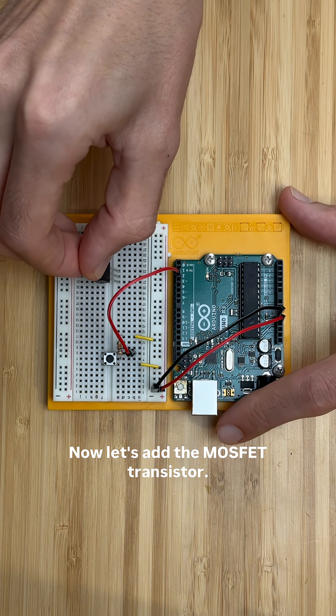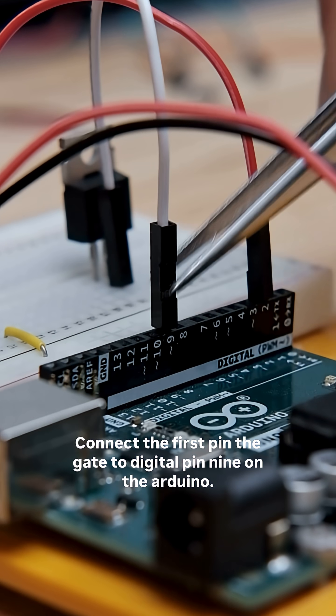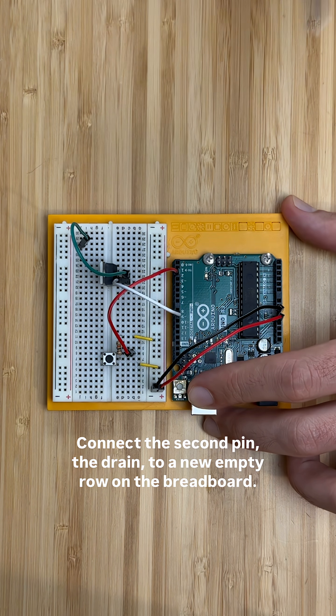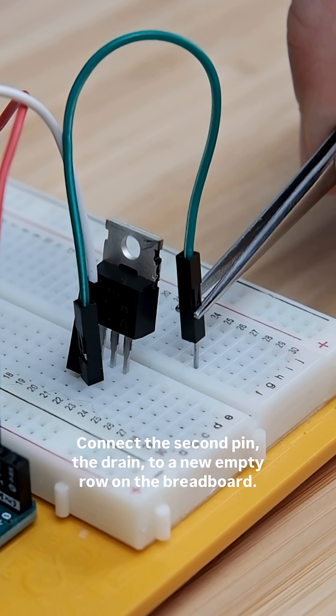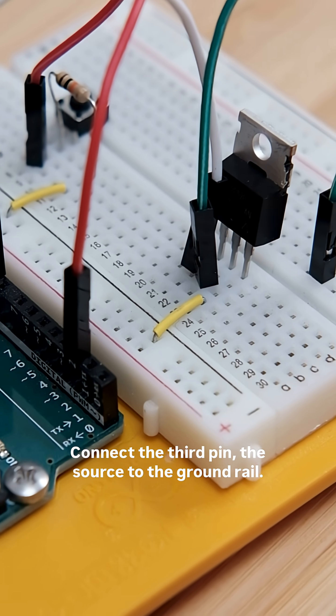Now let's add the MOSFET transistor. Connect the first pin, the gate, to digital pin 9 on the Arduino. Connect the second pin, the drain, to a new empty row on the breadboard. Connect the third pin, the source, to the ground rail.